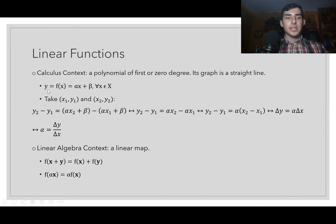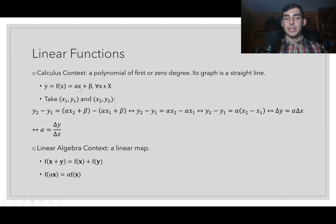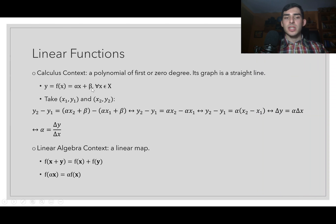Here is the general expression of a linear function in the calculus context: y = αx + β, where y is the dependent variable — representing the outputs — and x is the independent variable. The coefficient α is the slope coefficient and β is the intercept. This function holds true for all values of x in the domain.